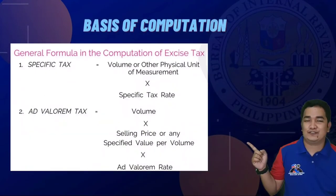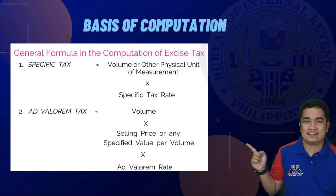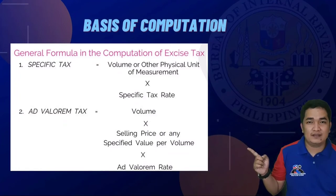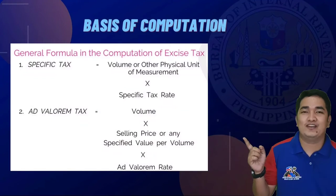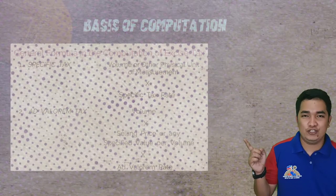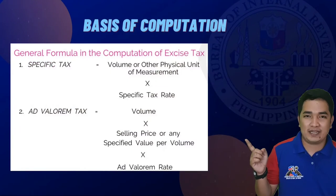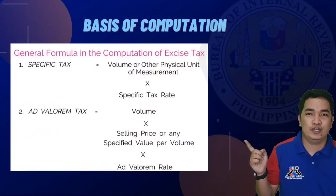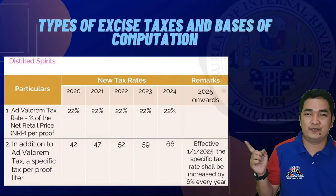Please refer to the general formula in the computation of excise tax. For specific taxes, we start with the volume or other physical unit of measurement multiplied by the specific tax rate. For ad valorem tax, we have the volume multiplied by the selling price or any specified value per volume, multiplied by the ad valorem rate.